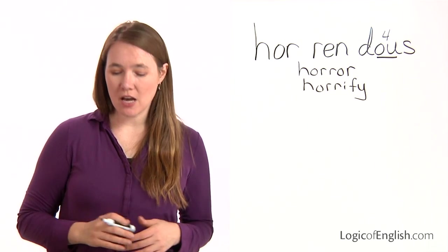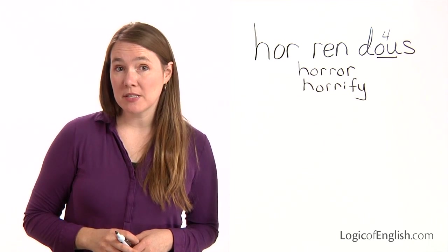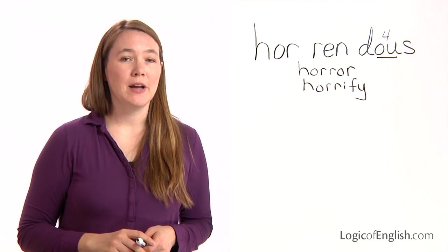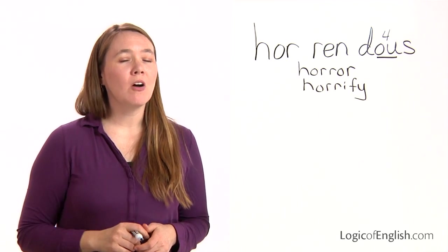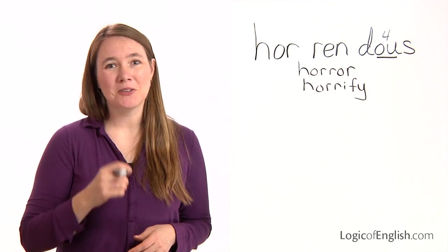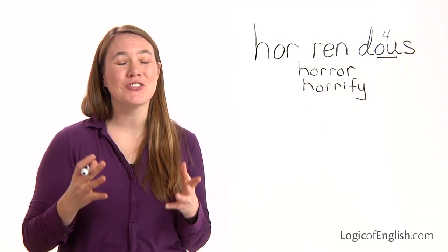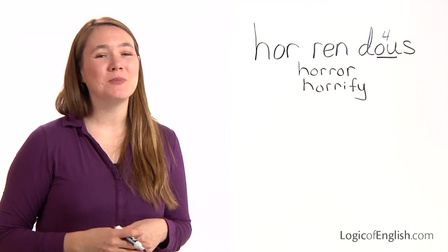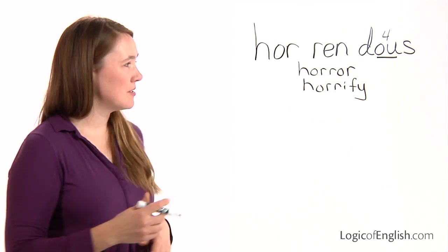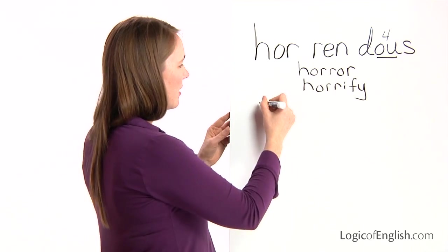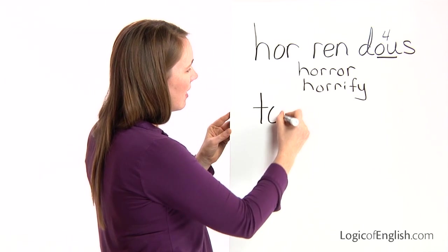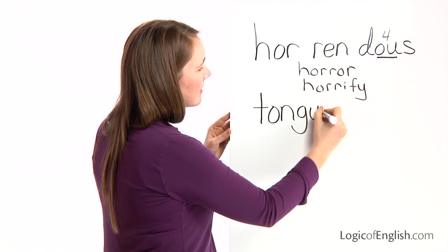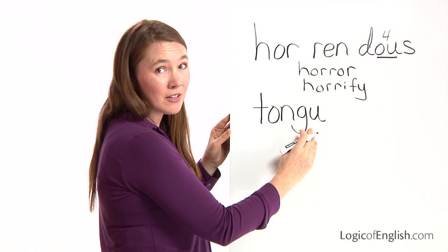The next word is tongue, and this word was submitted by Mary. How many syllables in tongue? One. This word always confused me until I learned the Logic of English and the phonogram GU. So let's sound it out together: T, aw, N, GU. Notice we used a two-letter GU here.